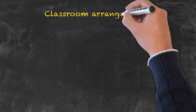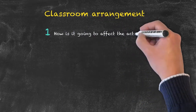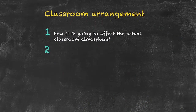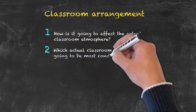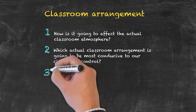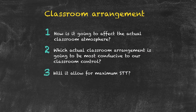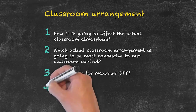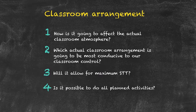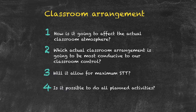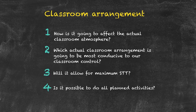When thinking about classroom arrangements, we need to consider a number of questions: how is it going to affect the classroom atmosphere? Which arrangement is going to be most conducive to classroom control? Will it allow for maximum student-to-student interaction? And is it possible with the particular arrangement to do all of the planned activities? Before you arrange the classroom in any particular way, ask these questions and think about the physical space, the age of the students, and from those parameters decide which arrangement is best.